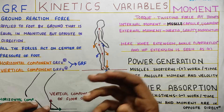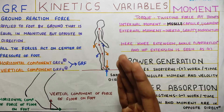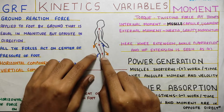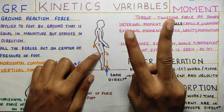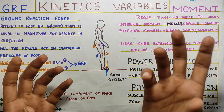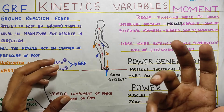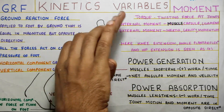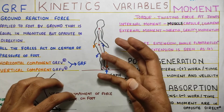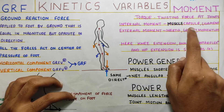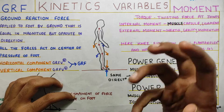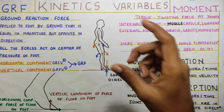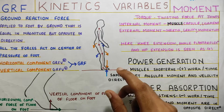Ground reaction force is calculated through force plates, which we will cover in the next part of the video. Next, moving on to moment. Moment is basically a twisting or turning force at each joint, created by two forces — internal and external. In static posture, gravity pulls your body downward and all the muscles from inside create force to keep your body upright. The same thing happens in gait. The internal moment is created by muscles, capsules, and ligaments, and the external moment comes from inertia, gravity, and momentum. When your muscles, capsules, and ligaments fight these external forces, a torque is created at each joint — and that is your moment.